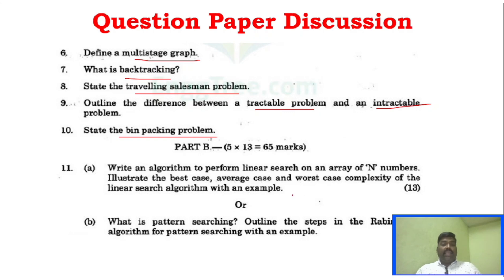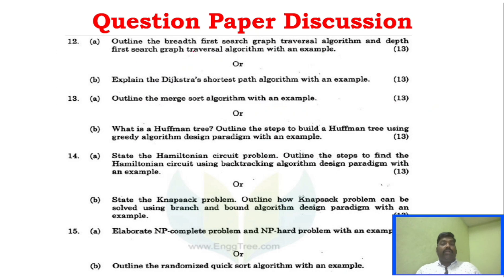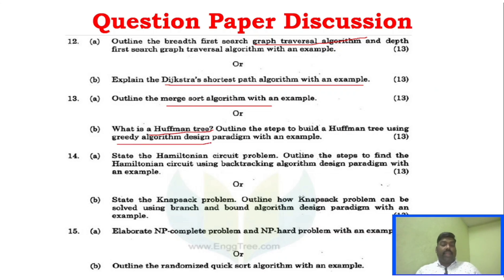In the Part B questions of April-May 2023: Linear search algorithm (scenario-based), Rabin-Karp algorithm for pattern search, graph traversal algorithm, Dijkstra's shortest path algorithm (the main one among the three algorithms), Merge sort algorithm, Huffman tree under greedy algorithm design, Hamilton problem in Unit 4, and random quicksort algorithm.